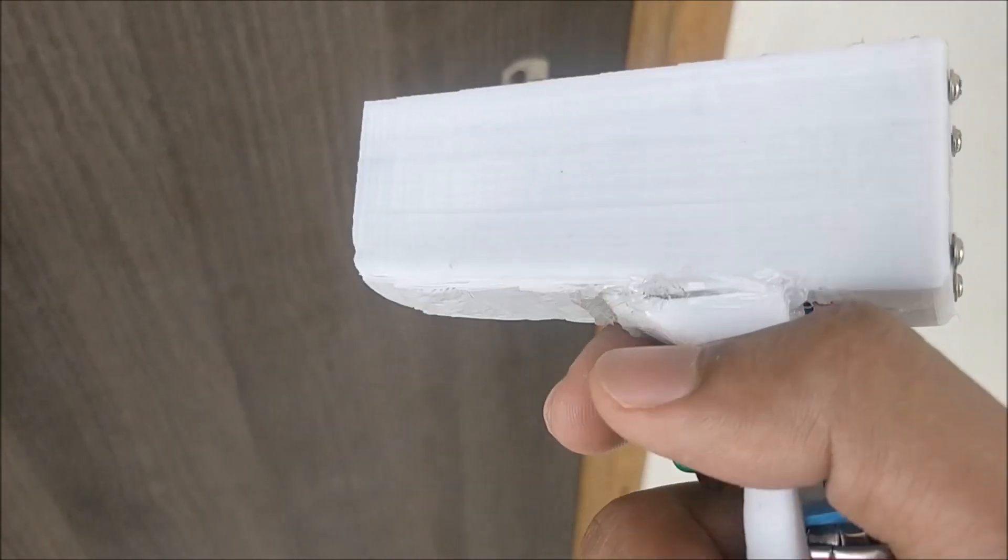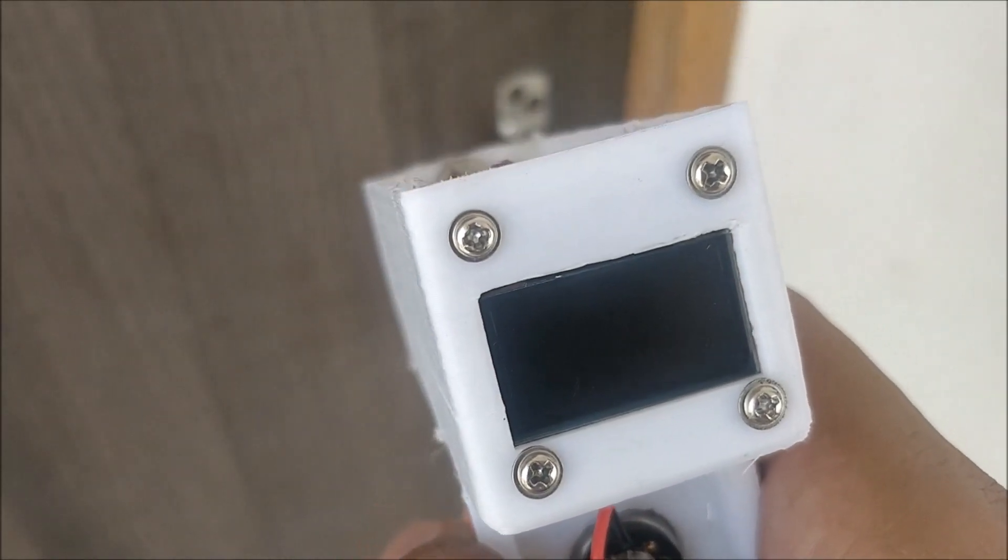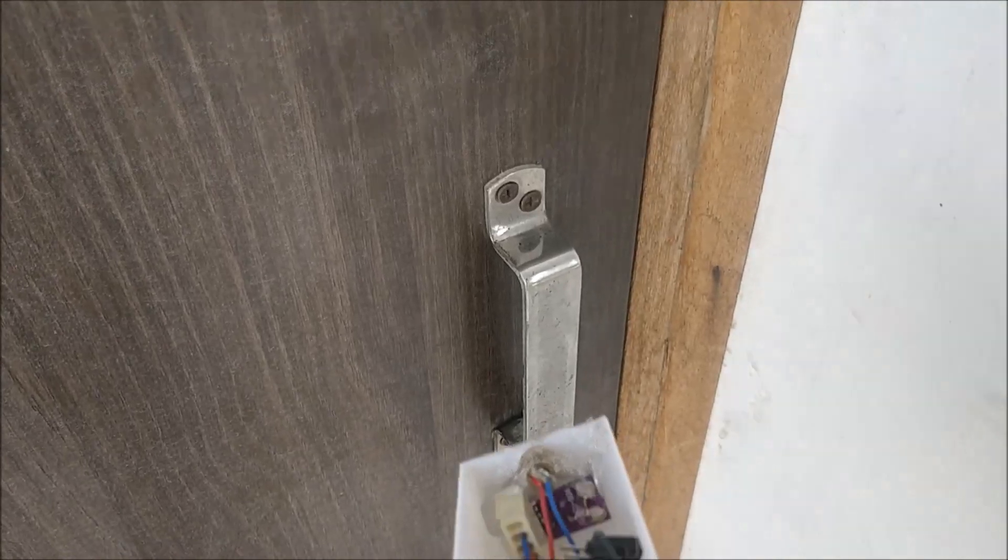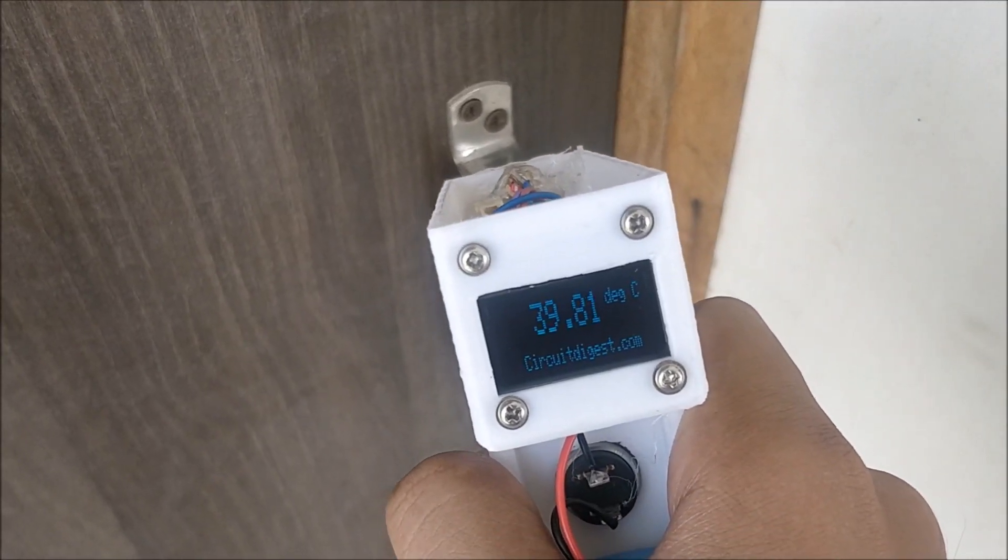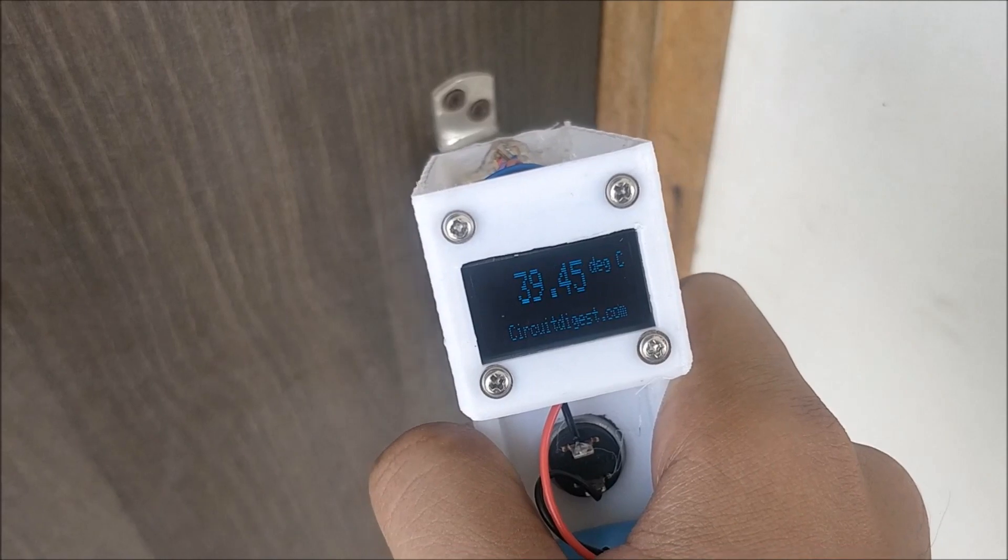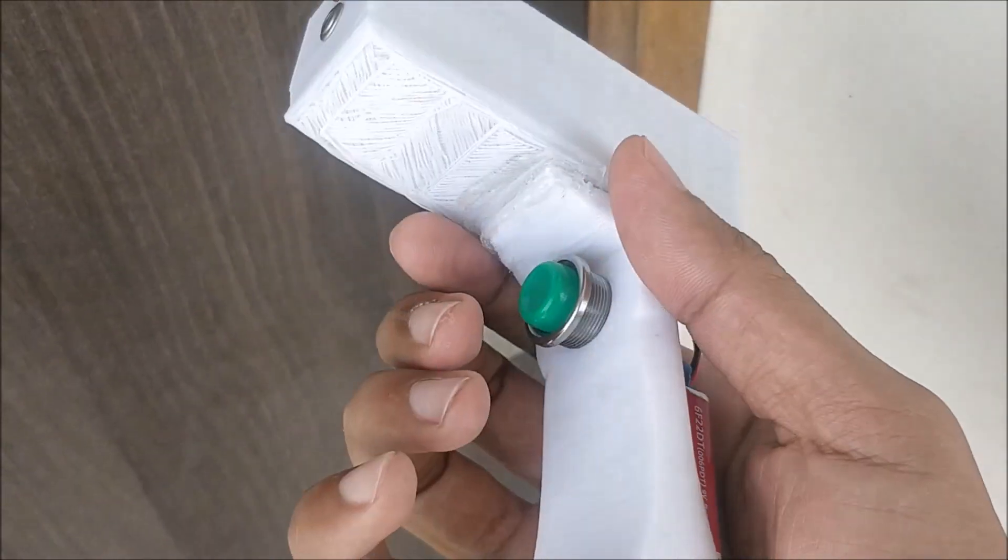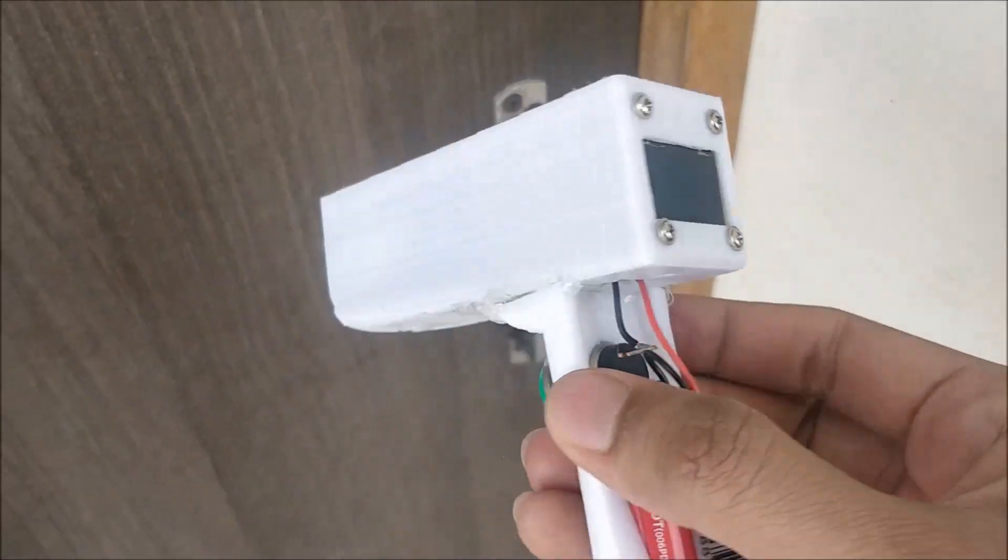Okay, now we are outside and the temperature is pretty high over here. Let's try to measure the temperature of this metal handle. Pointing the gun at it, as you can see it's pretty much hot - it's around 40 degrees Celsius. That's it guys, this pretty much shows that the gun is working properly.